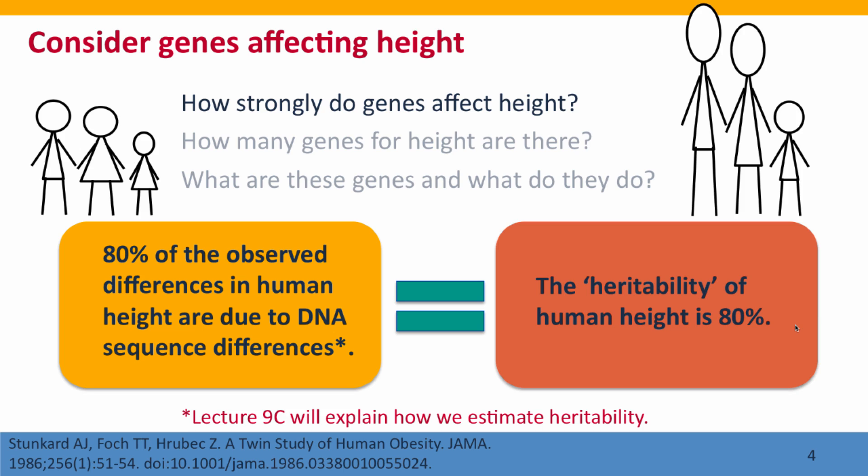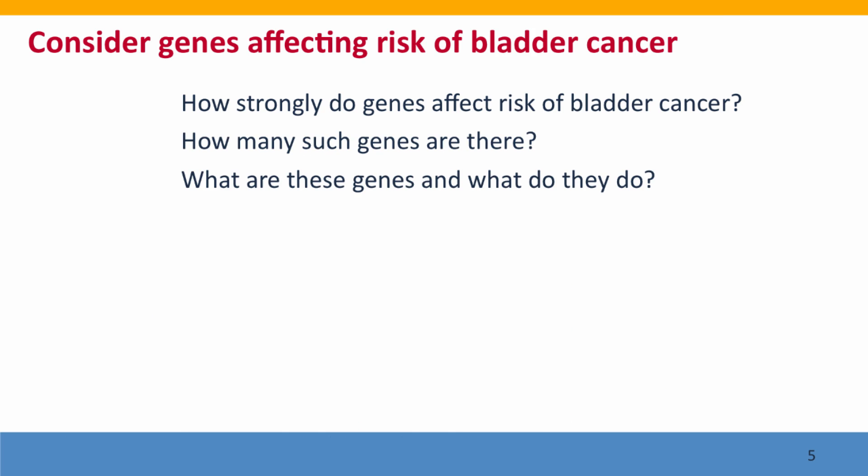We can apply the same concept to lots of other phenotypic features, and sometimes we'll find high heritability. 80% is very high — it means that only 20% of the differences are due to differences in chance and in environment. But we can ask about things such as the risk of bladder cancer. We can ask, how strongly do genes affect the risk of bladder cancer? Once we know this, we may be able to find out how many genes there are and what these genes do, which will give us insights into how bladder cancer arises.